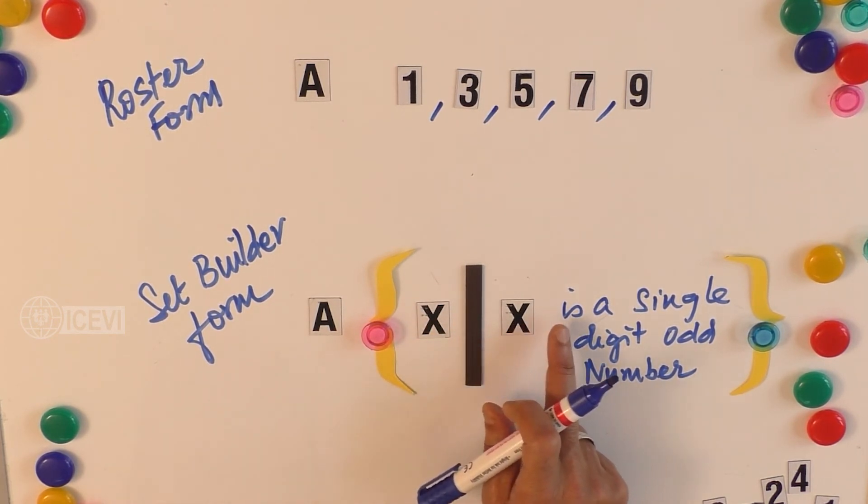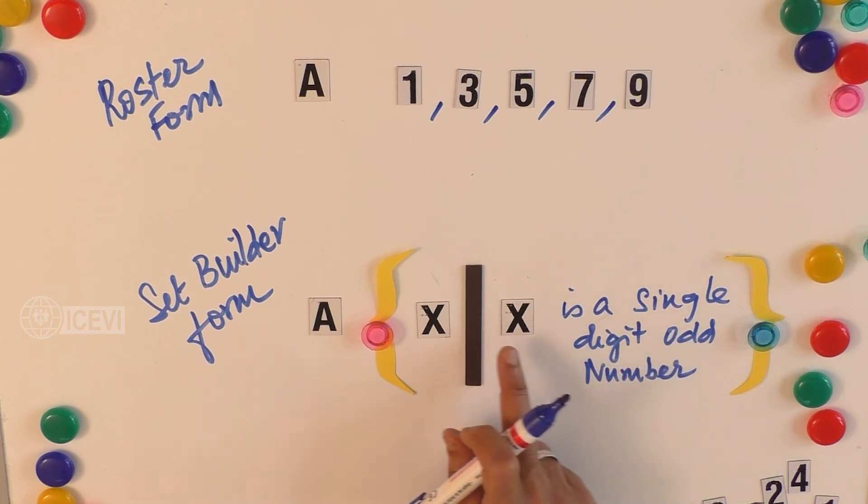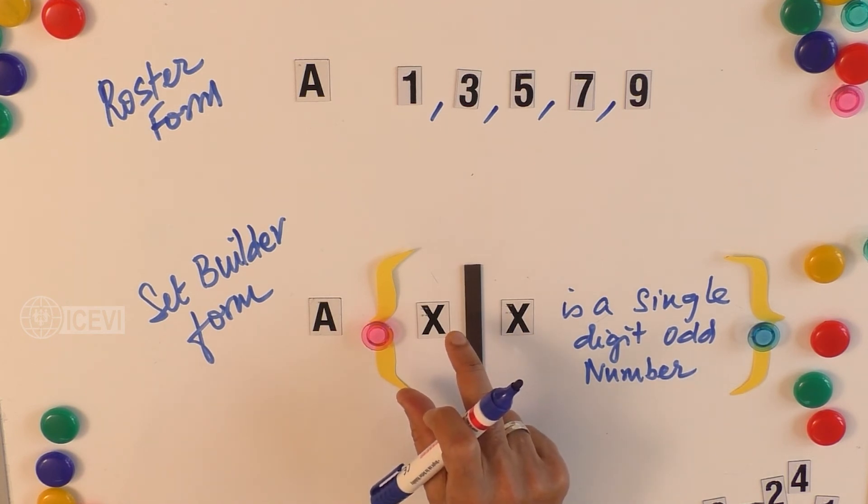Whenever the set builder form is presented, the child must look for the attributes of that value. So this is also called the descriptive method.